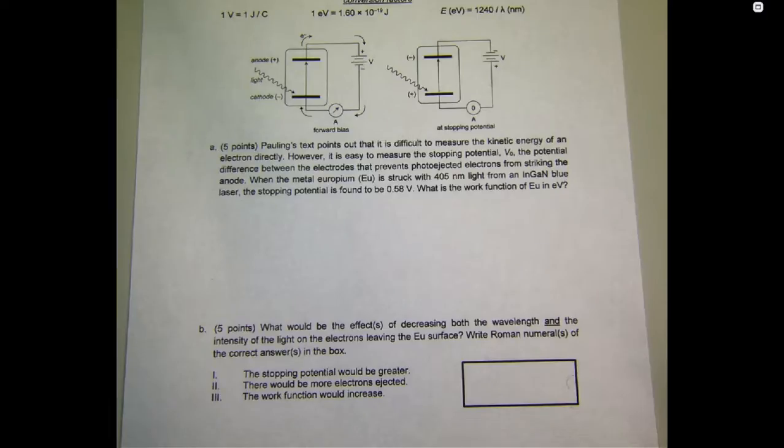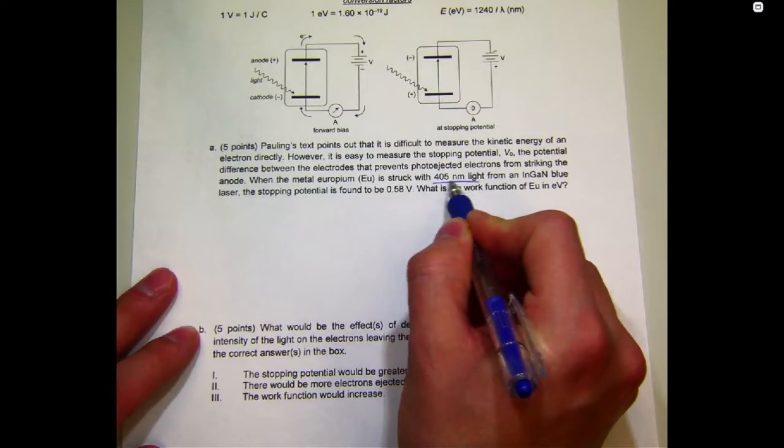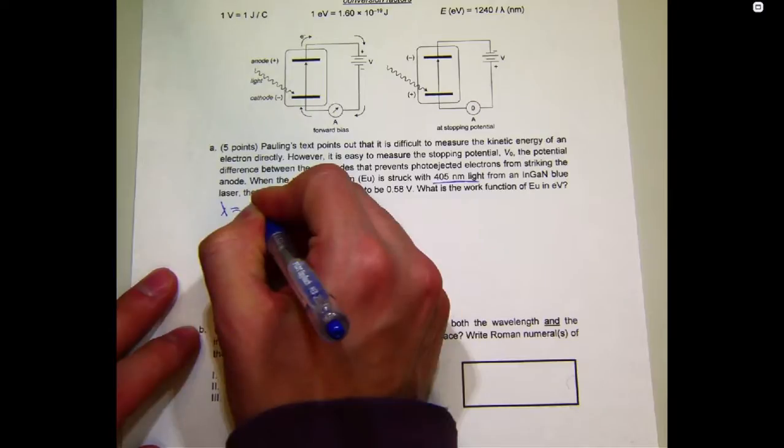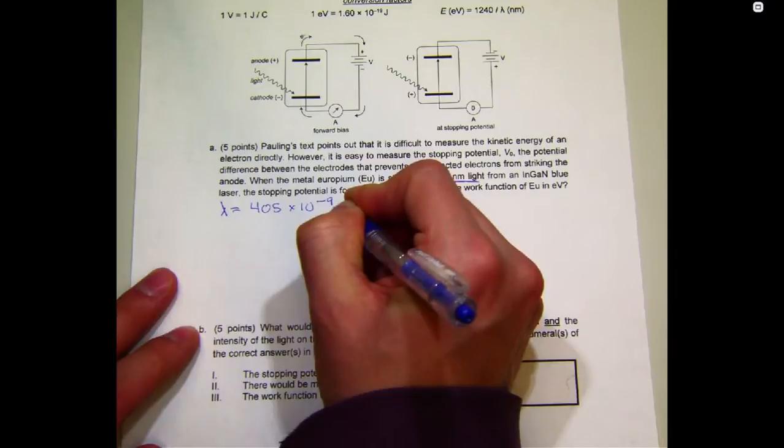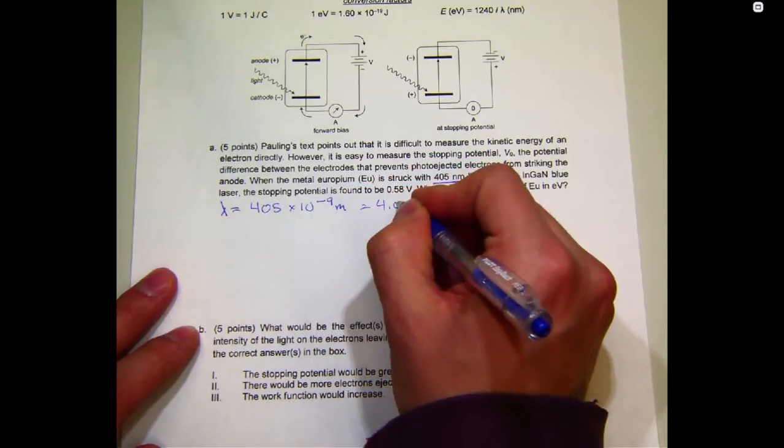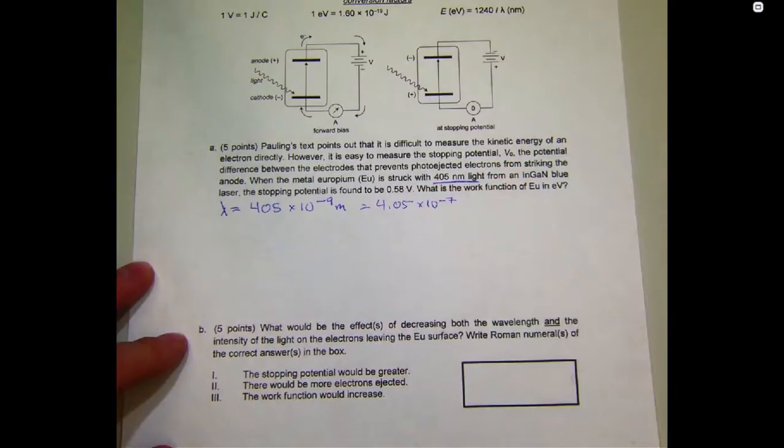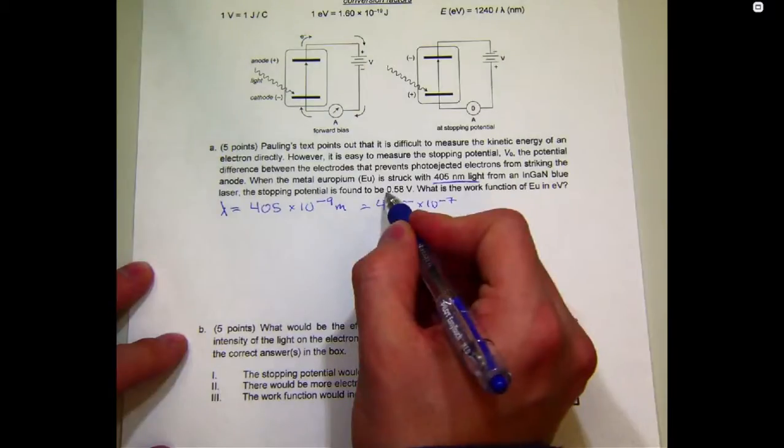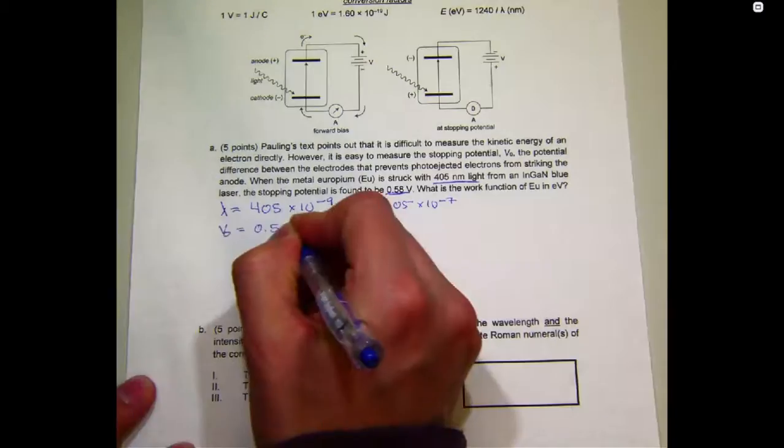For example, I'm reading through this problem, and I see that the light is 405 nanometers. I know that to be the wavelength, so I'll write that down. Lambda equals 405 times 10 to the minus 9 meters. You could also write that as 4.05 times 10 to the minus 7. What else do I have here? I have the stopping potential of 0.58 volts. So, I'll write that down. V naught equals 0.58 volts.